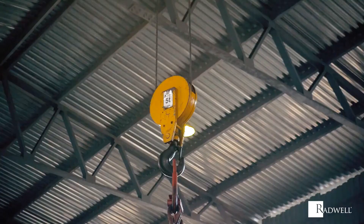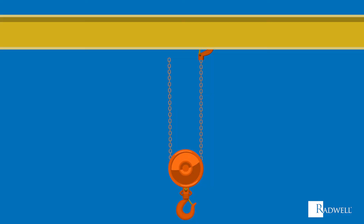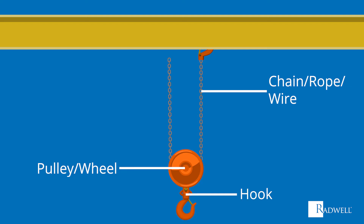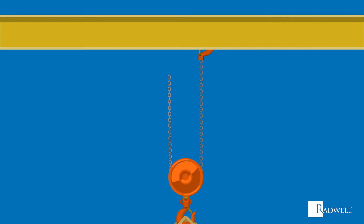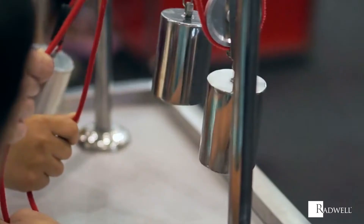A movable pulley is a little bit more complex than a fixed pulley. This is because a movable pulley allows for the pulley to move up and down while the end of the rope is fixed. A movable pulley is also made up of a wheel, a chain, a rope, or a wire and a hook attached to it. With the rope, cable, or wire fixed to an immovable object, the wheel of the pulley will be attached to the load by the hook. The rope will wrap around the wheel, and with an upward pull of the rope, the object will be lifted along with the wheel.